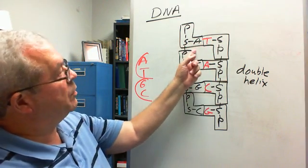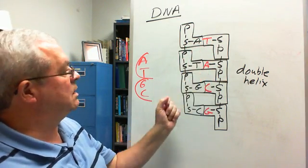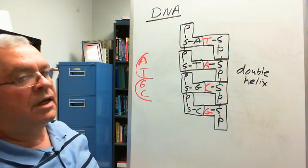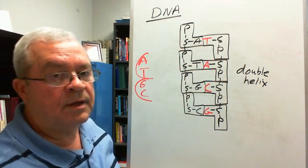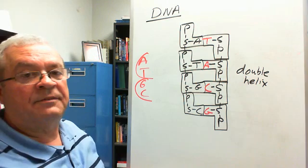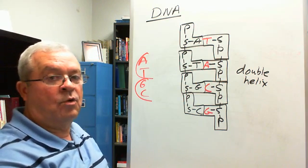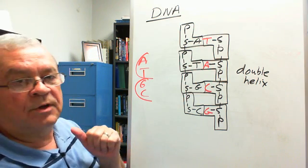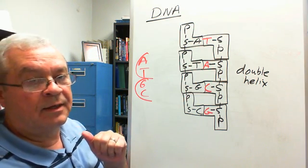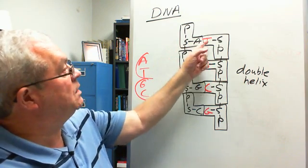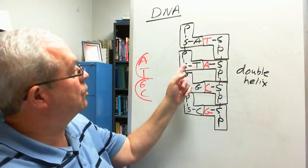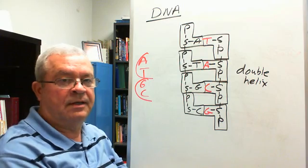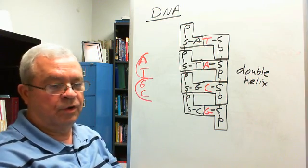We always have an A connected to T and a T connected to A — those form the rungs. And where are the rungs connected to the ladder — at the phosphates or the sugars? They're connected to the sugars: sugar-A-T-sugar, sugar-T-A-sugar. Yes, the rungs are connected across the sugar groups.